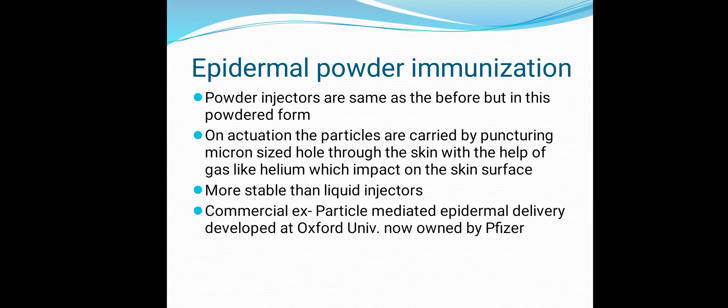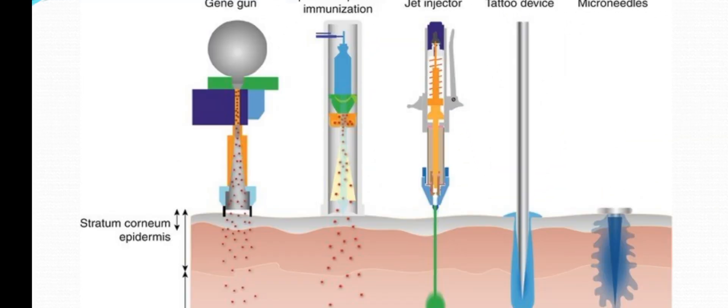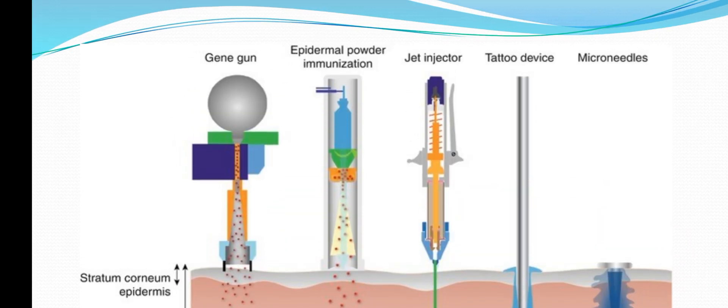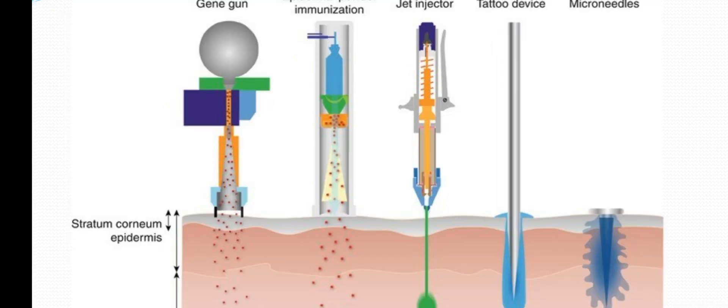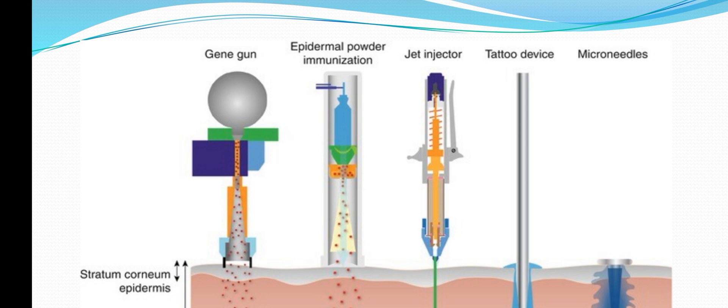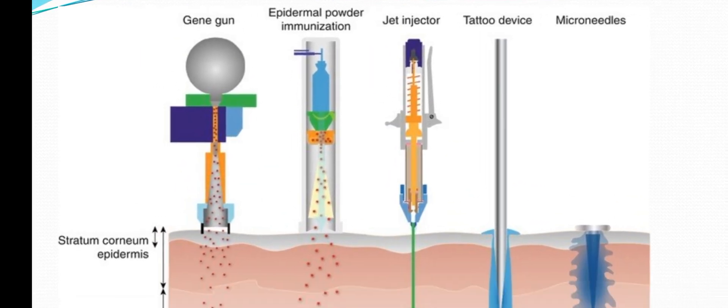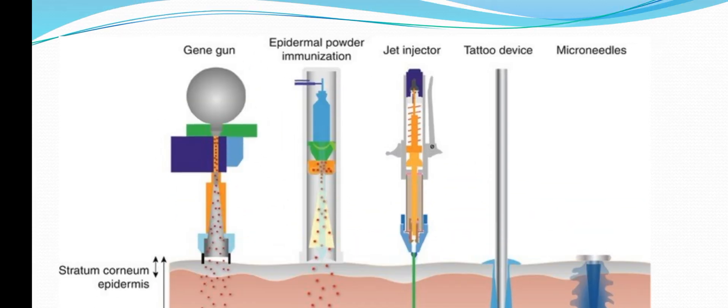Second is epidermal powder immunization. It is similar to liquid injection, but powder is used in place of liquid. Powder injectors are the same as before but in powder form. It is more stable than liquid injectors. A commercially available example is particle-mediated epidermal delivery, developed at Oxford University, now owned by Pfizer. Examples shown include a gene gun and the epidermal powder immunization device, as well as a jet injector and a tattoo device.